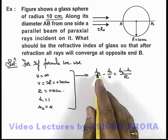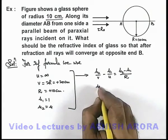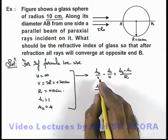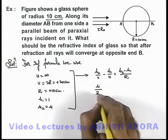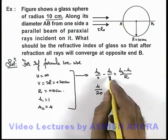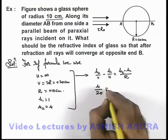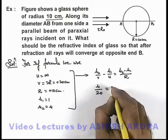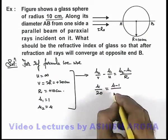The value of mu2 I can take as mu by the value of v we are given as 20, and as u is infinity the term will vanish. This is equal to mu2 minus mu1 that is mu minus 1 by R which is 10.